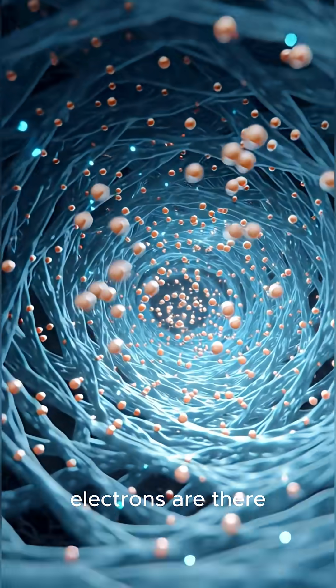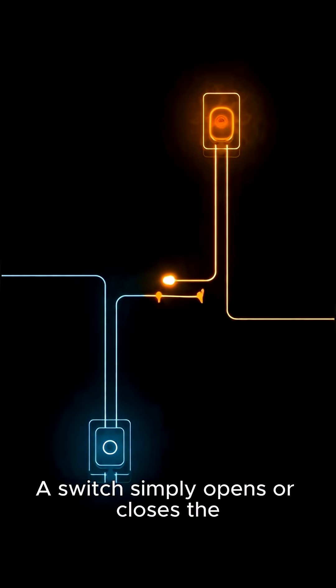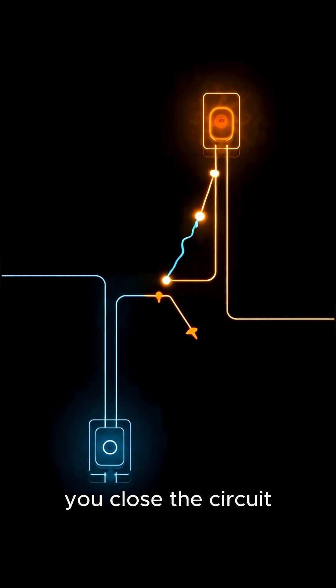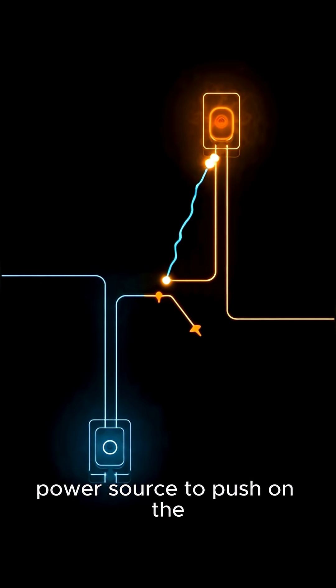When the switch is off, electrons are there. They're just not moving in any organized direction. A switch simply opens or closes the electrical path. When you turn it on, you close the circuit.